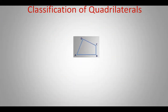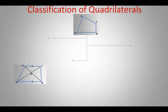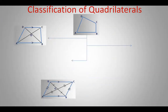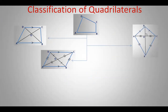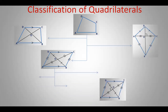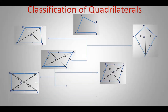Let us summarize the classification of quadrilaterals. A quadrilateral can be divided into three types: if one pair of opposite sides are parallel, it is a trapezium; if both pairs of opposite sides are parallel, it is a parallelogram; if both pairs of adjacent sides are equal, it is a kite. A parallelogram can further be divided into three types: if adjacent sides are equal, it is a rhombus; if adjacent angles are equal, it is a rectangle; if all sides are equal, it is a square.